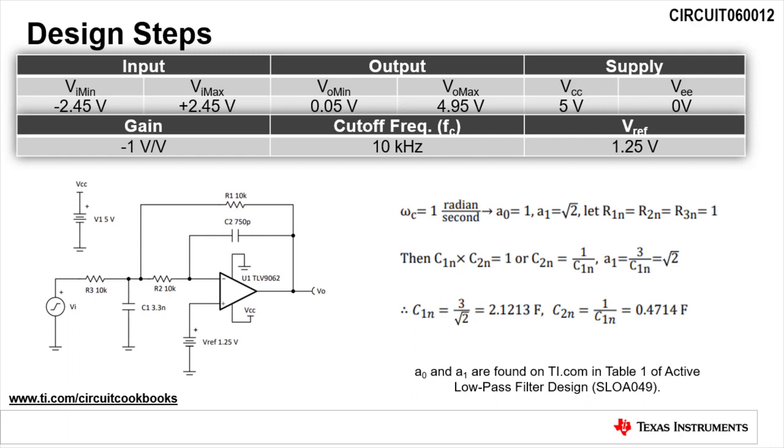Look up the values of a0 and a1 in TI's active low-pass filter design application report, and set the normalized values of R1 through R3 to 1 ohm. Please note that the subscript N is used to represent the normalized values. These values will be adjusted later.